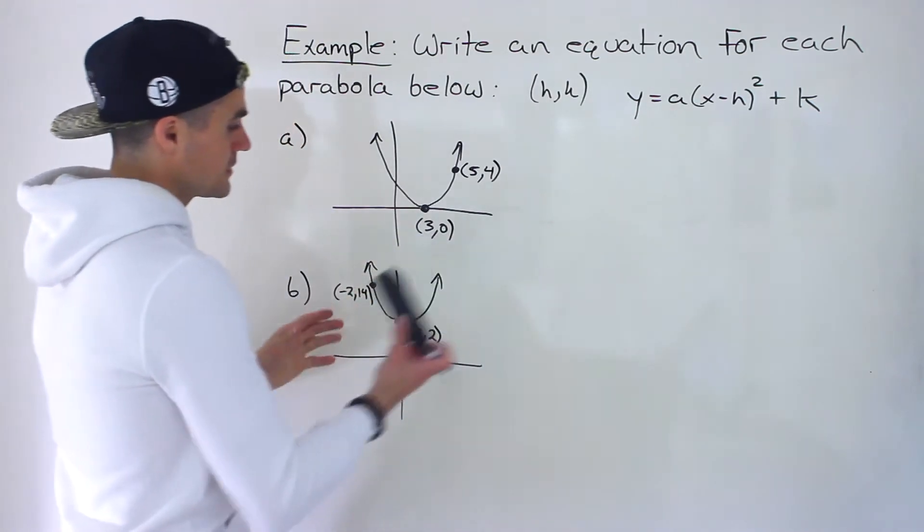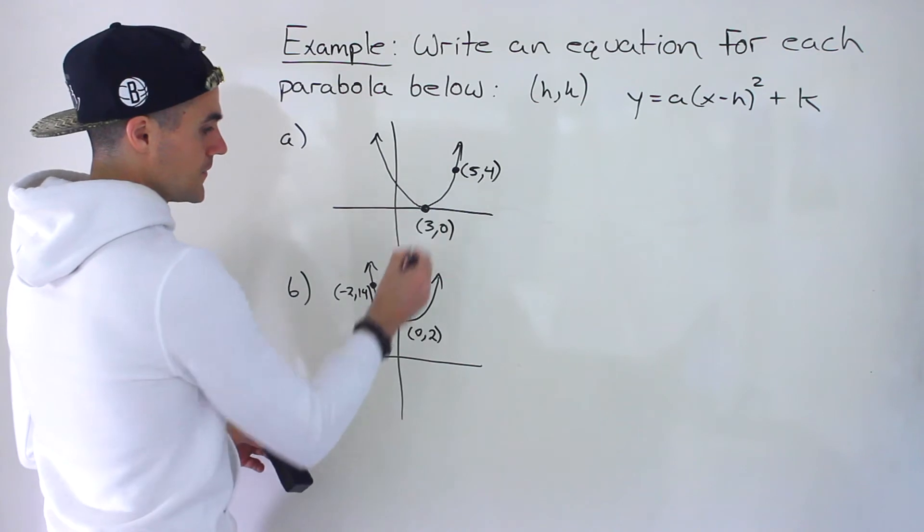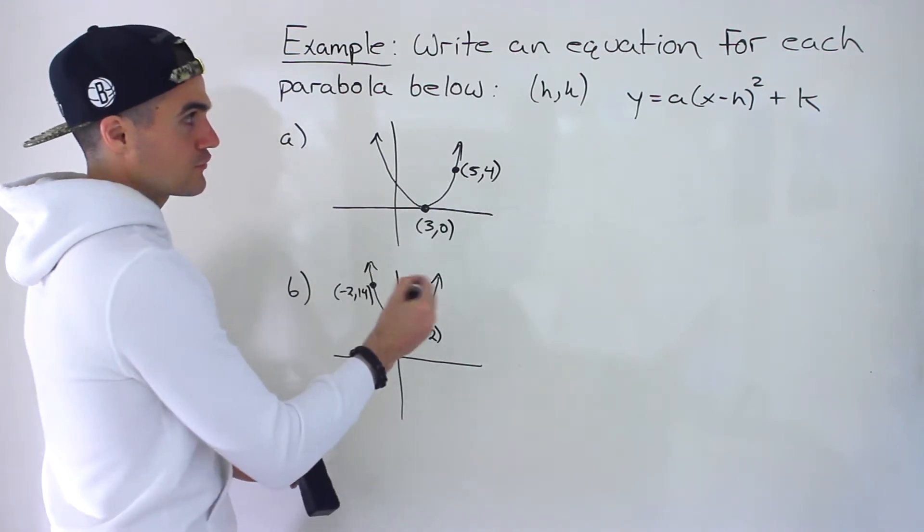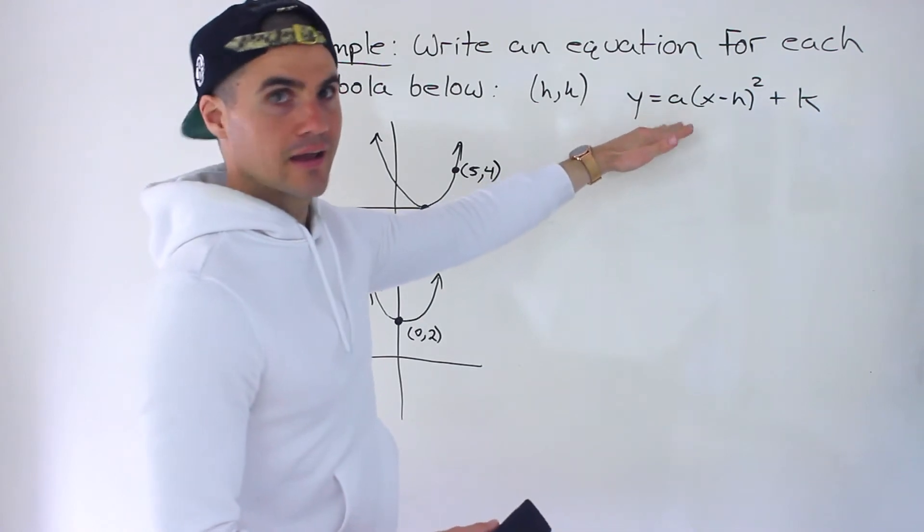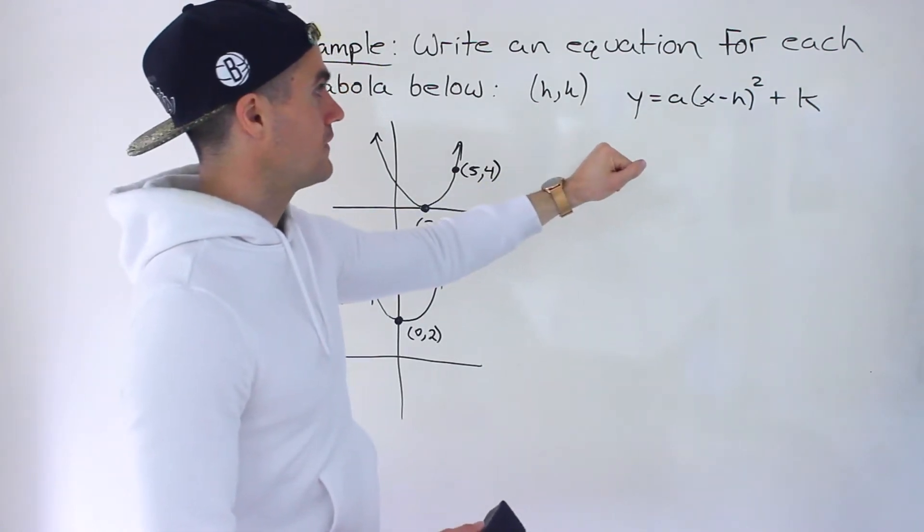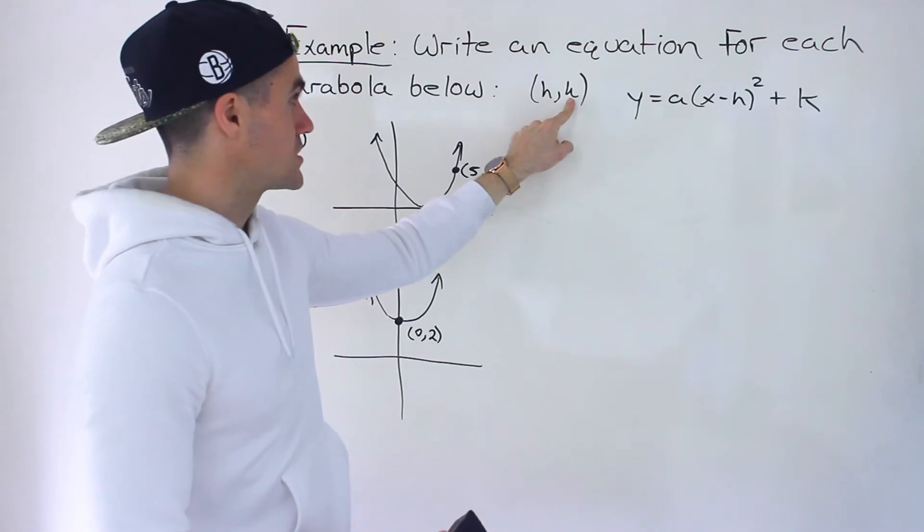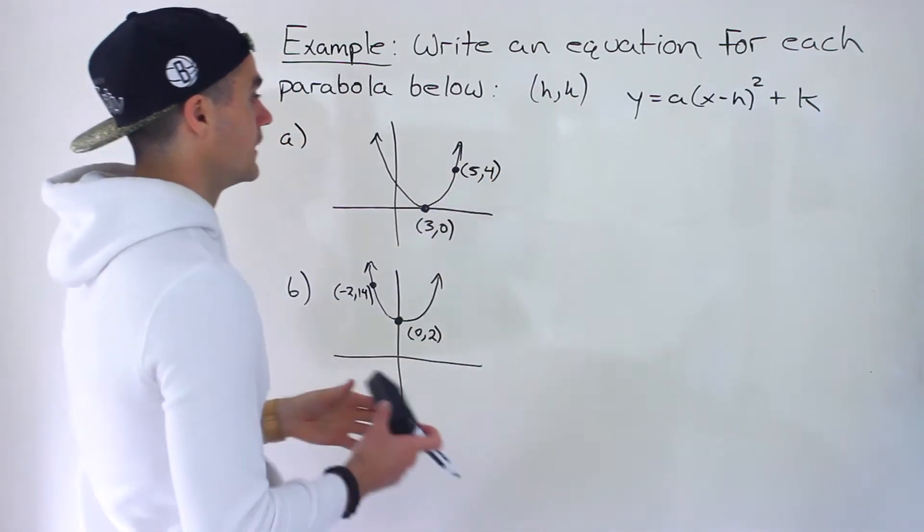So if you get something like this where you're given the vertex on a graph and you have to find the equation, highly recommend putting it in vertex form. And then you don't even have to do algebra for the H and K value, which is nice too. You just automatically get it.